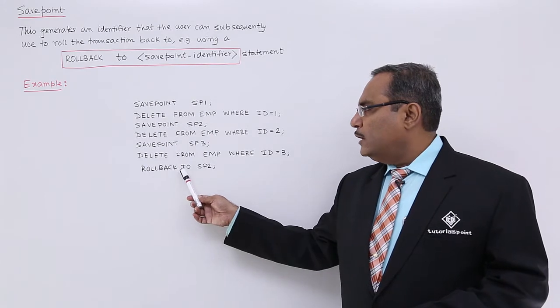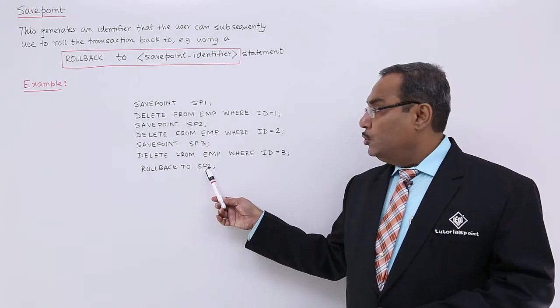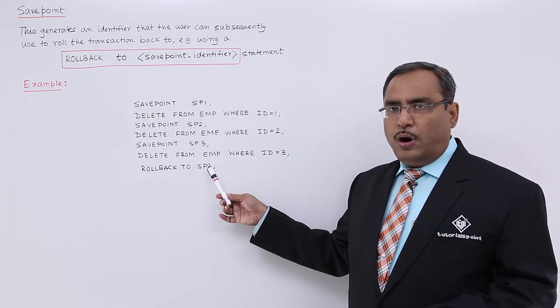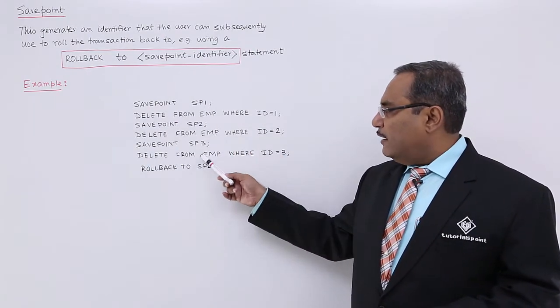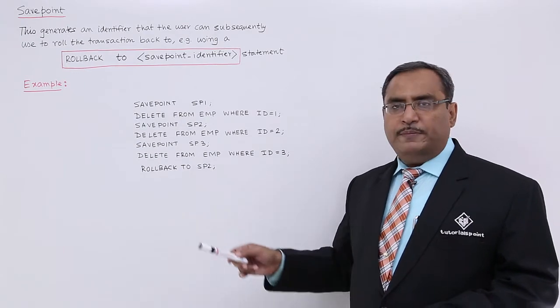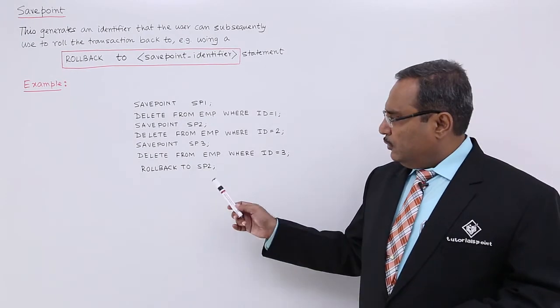Now, we are writing rollback to SP2. So, that means, we are doing the undo operation up to this particular SavePoint. That means, after this, if we go for select star from EMP, in that case, what will happen?